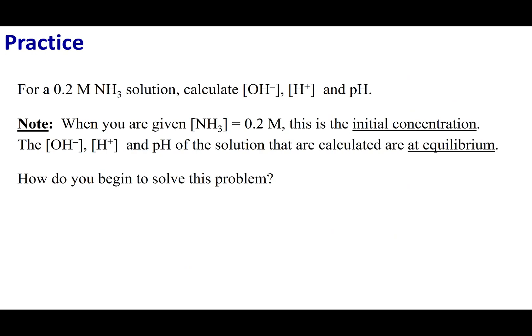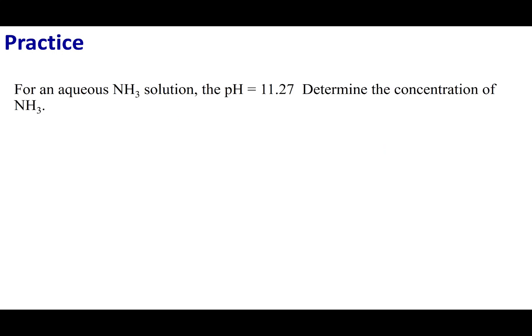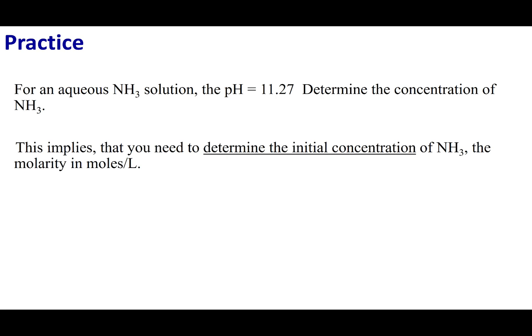All right, ladies and gentlemen, now that I showed you how to work this problem forwards, I want you to practice by yourself if we were to try to run that problem backwards. Let's say I have a solution of NH3 and I tell you its pH is 11.27. What would be the NH3 concentration? And remember, when I say the concentration of NH3, I mean the initial concentration of NH3. So go ahead and try this. This is exactly like the last problem we talked about, except I'm running the problem backward. And see if you can get around 0.2 molar.